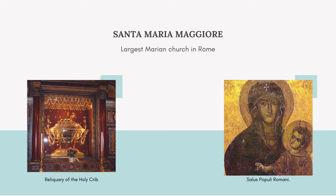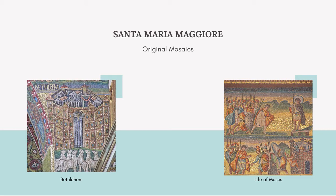The basilica also houses the reliquary of the holy crib and the holy image of Salus Populi Romani. There are a few groups of mosaics in this church. The first date from around the time that the church was founded. They are clearly influenced by Roman art with their classical stylization. Originally, there were 42 scenes from the Old Testament decorating the nave, but only 27 of them survive to the modern day. Another group of mosaics cover the triumphal arch, featuring scenes from the life of the Virgin. Because of the early date, the mosaics helped create the methodology for traditional depictions of Mary.